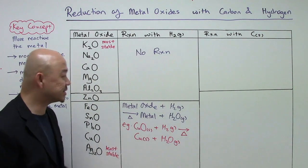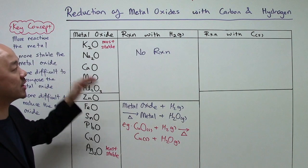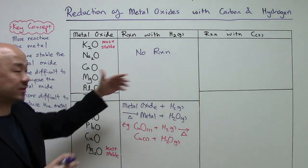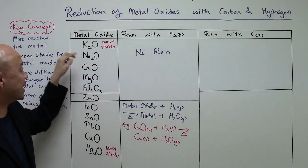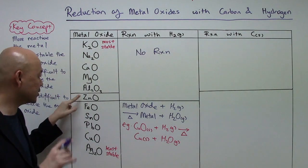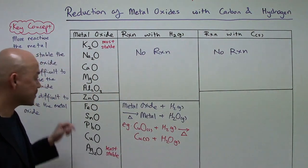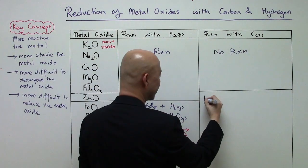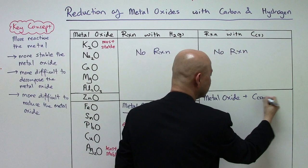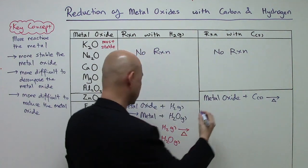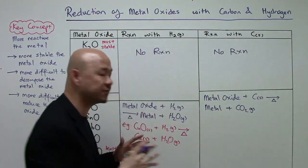Now let's look at the reaction with carbon as the other reducing agent. The metal oxides at the top do not react with carbon even with heating — they are very stable. The breakpoint here is different: from potassium oxide all the way to aluminium oxide, no reaction. From zinc oxide all the way to silver oxide, the metal oxides will react. The general equation is: metal oxide + C → metal + CO₂. Heat is again required.